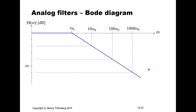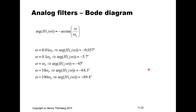For the phase transfer diagram of the first-order low-pass filter, the phase function is −arctan(ω/ω_p). At ω = ω_p, the argument is 1 so the phase is −45 degrees. Evaluating at 10·ω_p and 100·ω_p gives corresponding angles, which are tabulated for drawing the asymptotic approximation.